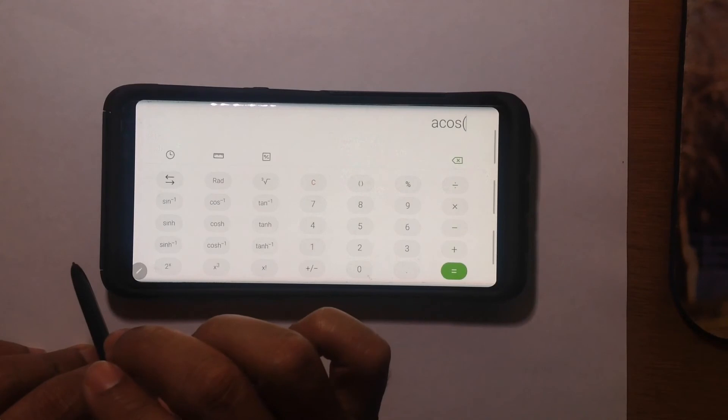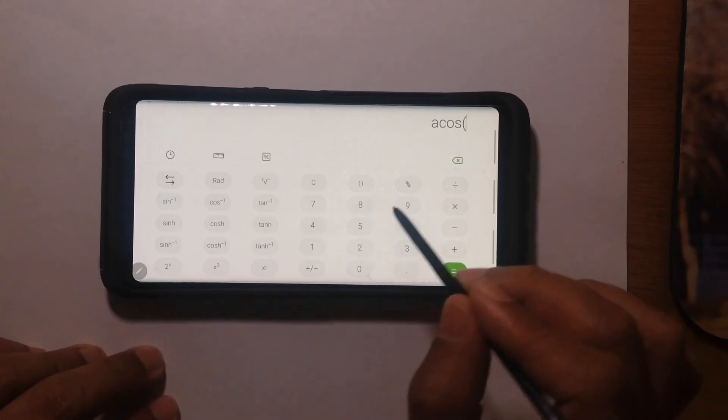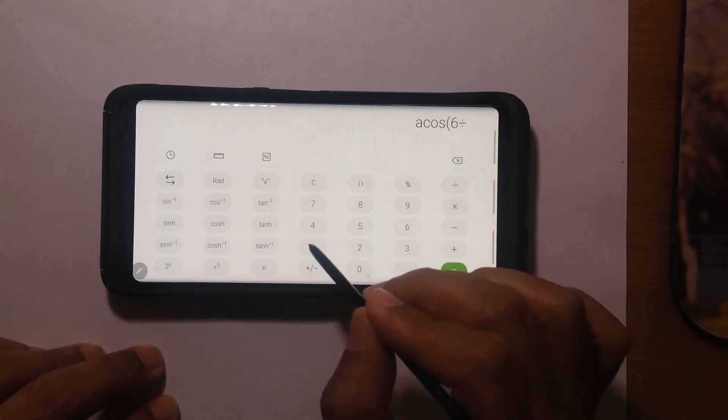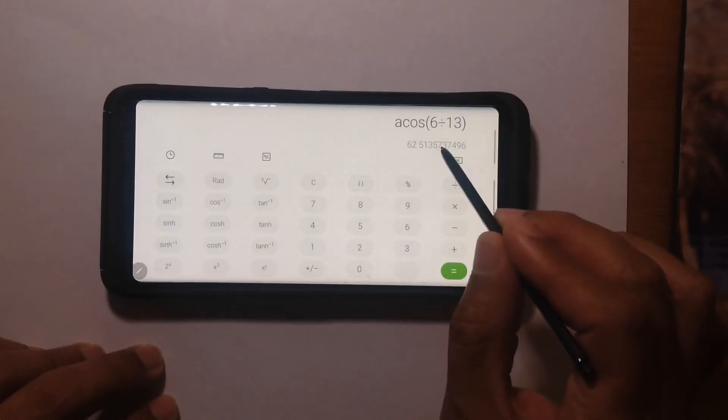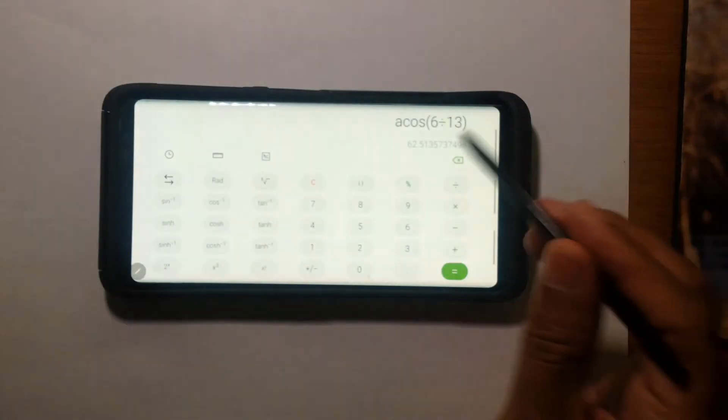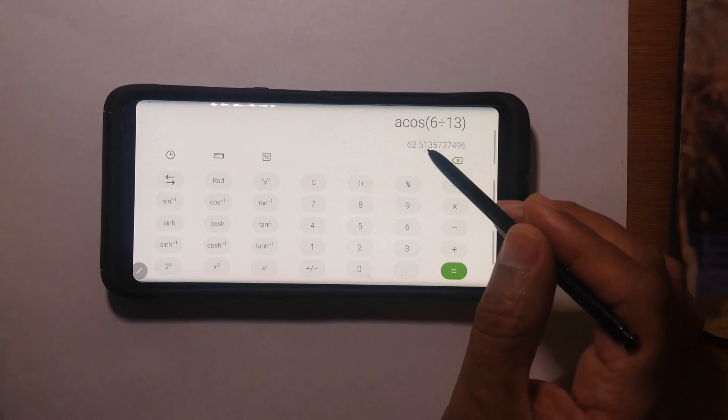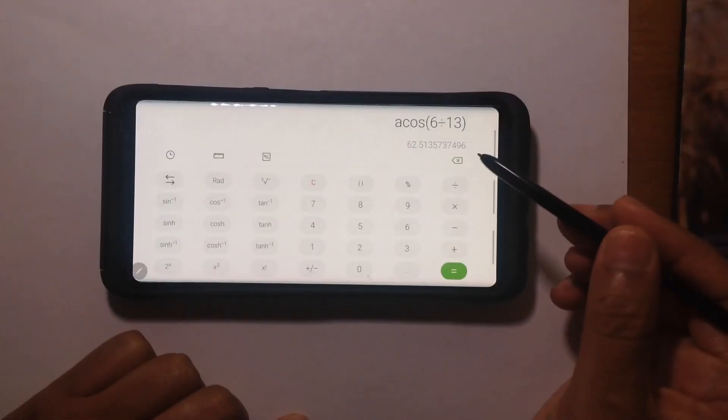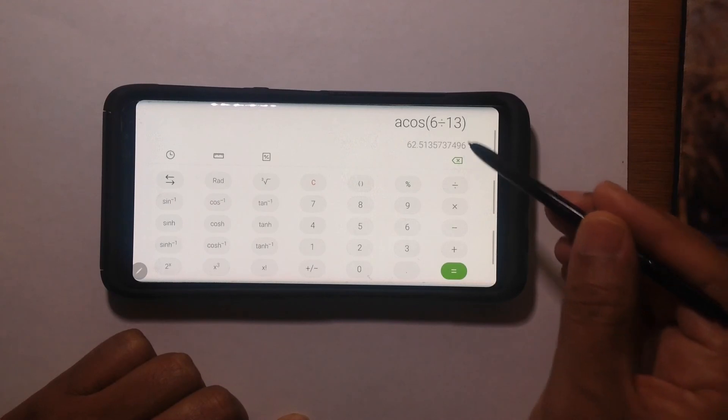To use the inverse function, I'm going to press inverse cosine, and then inside the parentheses it's going to be 6 divided by 13. I said that the angle was 63 degrees, but now you see how I got that answer. It's 62.5, but I rounded up to the next angle measure.